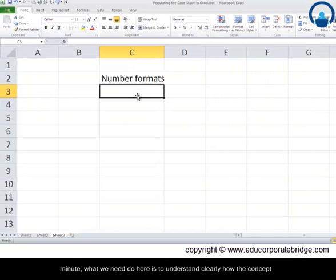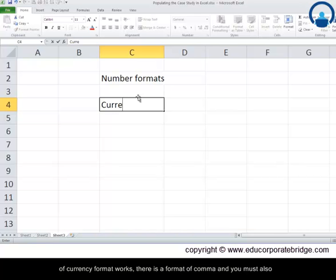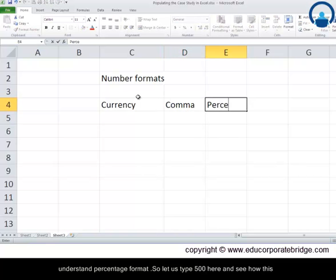What we need to do here is to understand clearly how the concept of currency format works. There is a format of comma, and you must also understand percentage formats. So let us type 500 here and see how this currency format works.